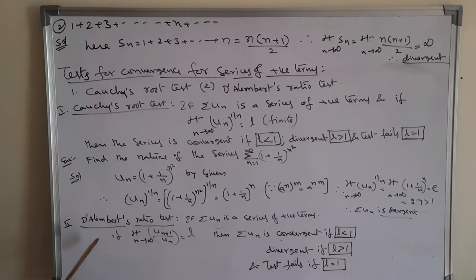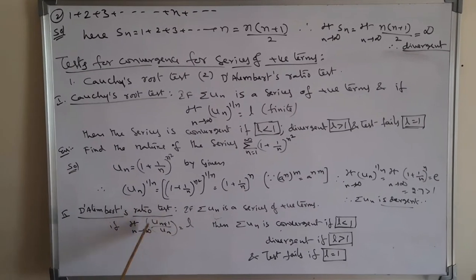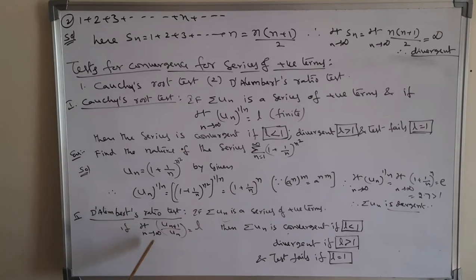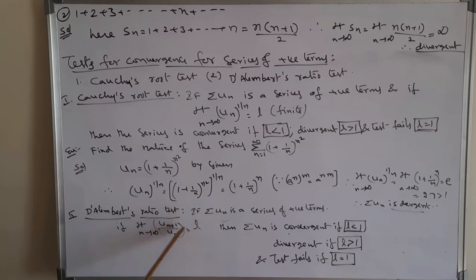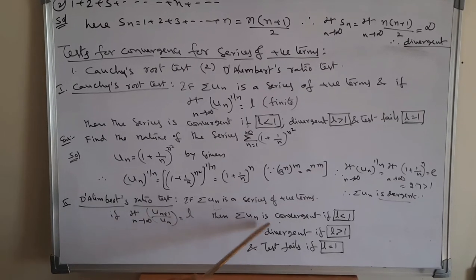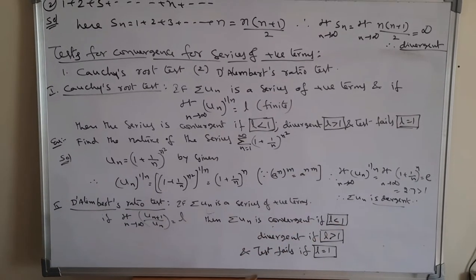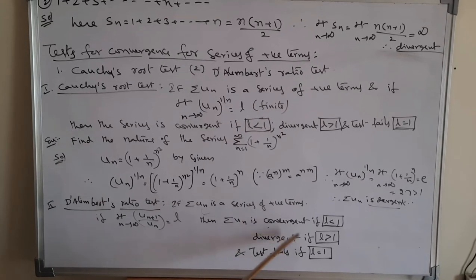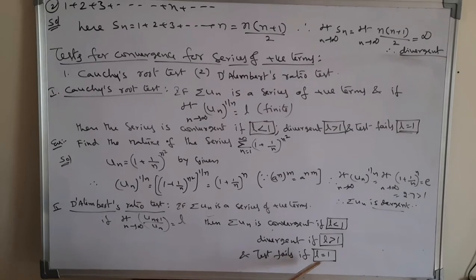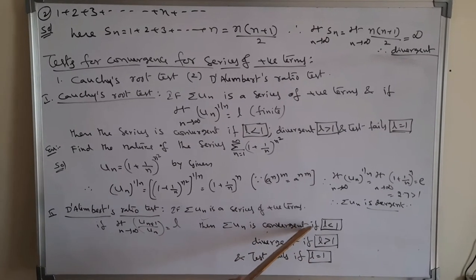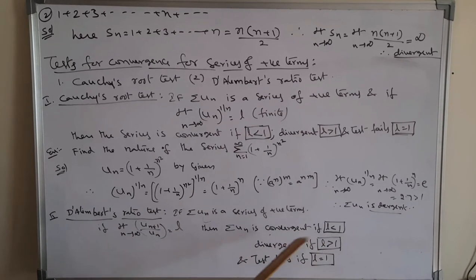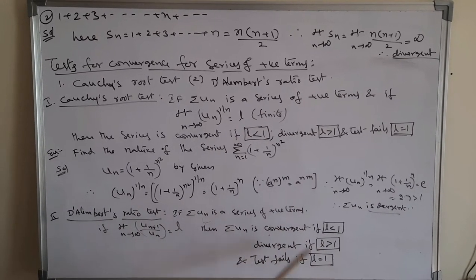Next is D'Alembert's Ratio Test. If sigma un is a series of positive terms and the limit as n→∞ of u(n+1)/un equals L (a finite quantity), then sigma un is convergent if L < 1, divergent if L > 1, and the test fails if L = 1.